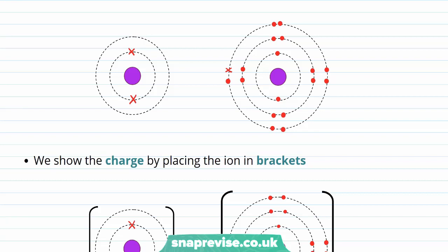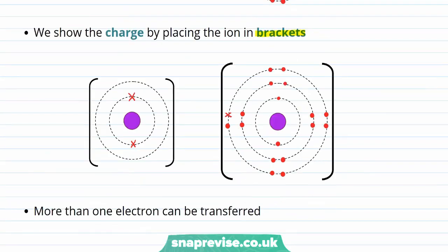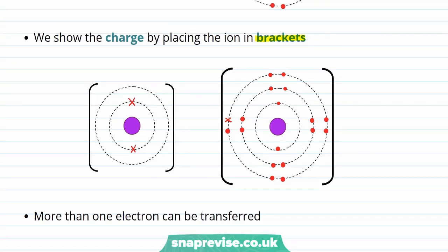The next step is to show that an ion has been formed, and we do this by placing the ion in square brackets. The final thing to add is the charges. On the left-hand side, we have lost an electron from a lithium atom to form a cation, so this ion has an overall positive charge, which we write in the top right-hand corner of our ion diagram. Likewise, we should add a negative charge to our chloride ion to show that one electron has been gained.